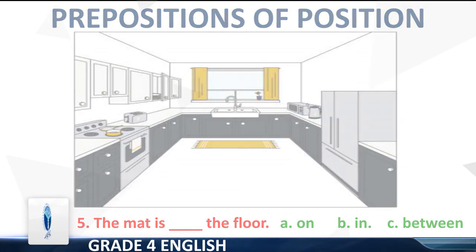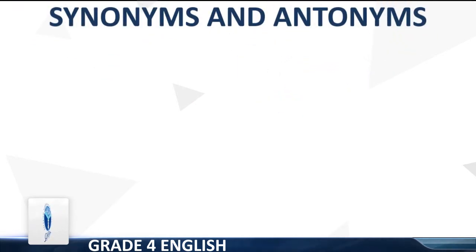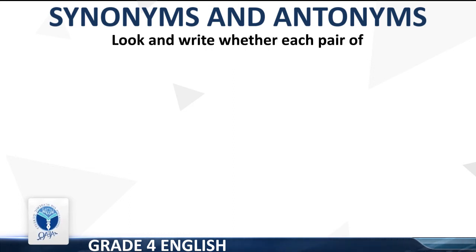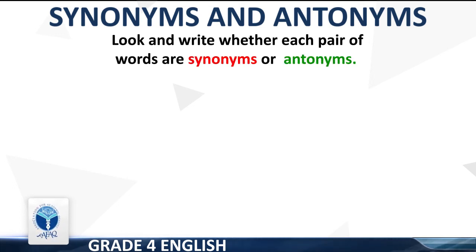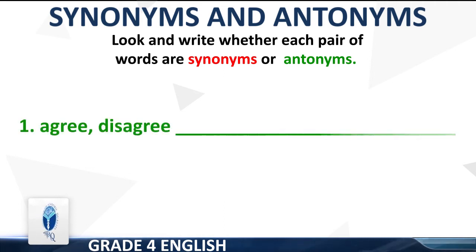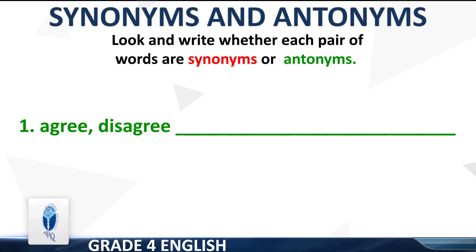Now move to the next sheet: Synonyms and Antonyms. The question is: look and write whether each pair of words are synonyms or antonyms. Point 1: agree / disagree. These are antonyms.